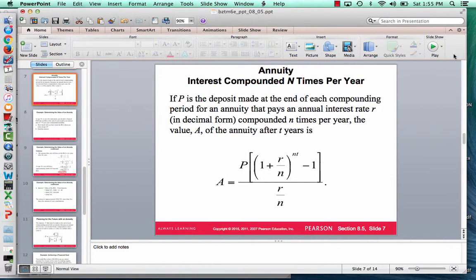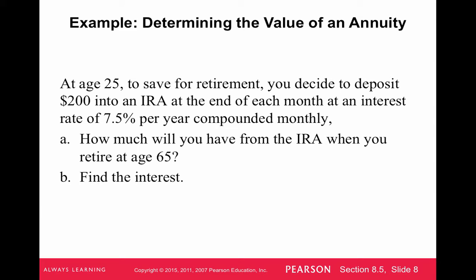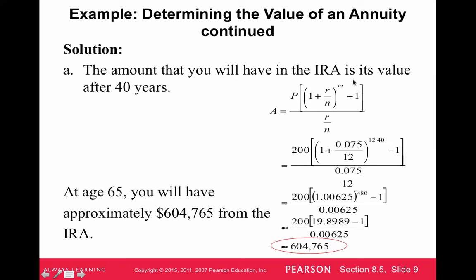At age 25, to save for retirement, you decide to deposit $200 in an IRA at the end of each month. The interest rate is 7.5% per year compounded monthly. How much will you have for the IRA when you retire at age 65? That's 40 years. So we're making $200 regularly scheduled payments, the interest rate is 7.5%, compounding monthly. I'm going to enter this all in one line in the calculator, and I prefer rounding to the nearest cent rather than the nearest dollar as the book does.